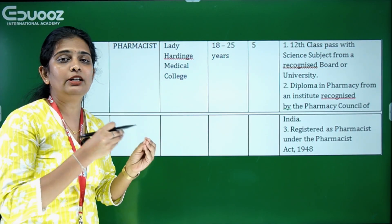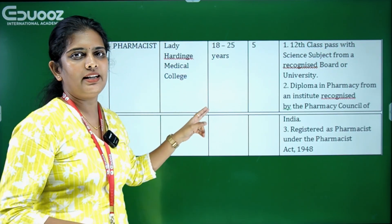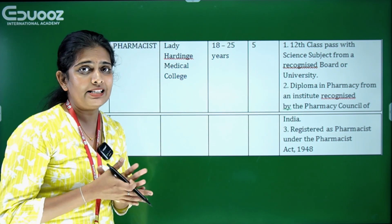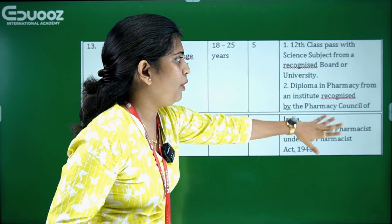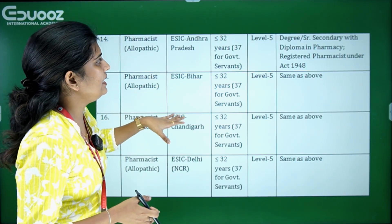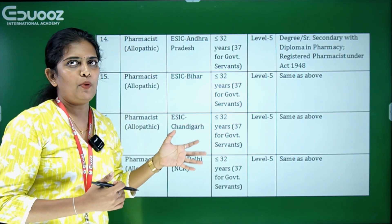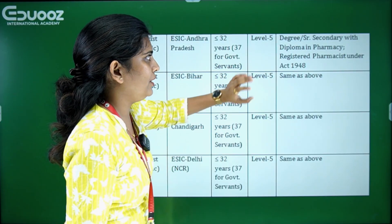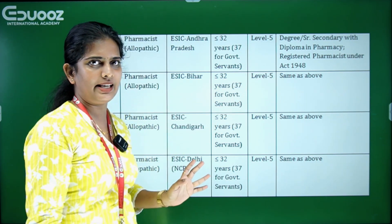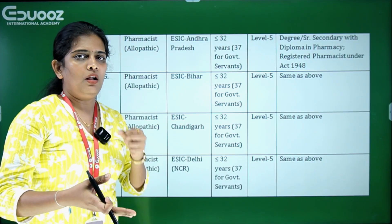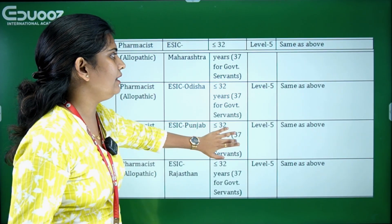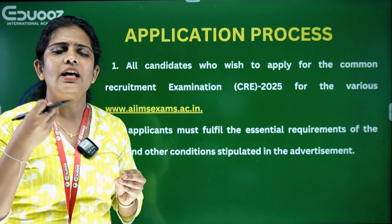For JIPMER, mainstream science subjects with a Diploma in Pharmacy and registration as a pharmacist are required. For ESIC, the age limit is 32 years (33 years for government servants). Qualification is Senior Secondary with a Diploma in Pharmacy and registered pharmacist status. Apply if within the age limit with the correct educational qualifications per the PDF.